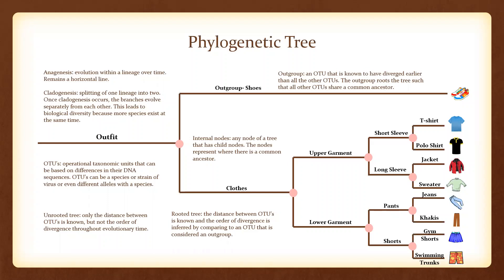From clothes, we diverge into our upper garment and lower garment branches. For the upper garment branch, we diverge into short sleeves and long sleeves. The short sleeves branch diverges into t-shirt and polo shirt, and the long sleeve branch diverges into jacket and sweater.